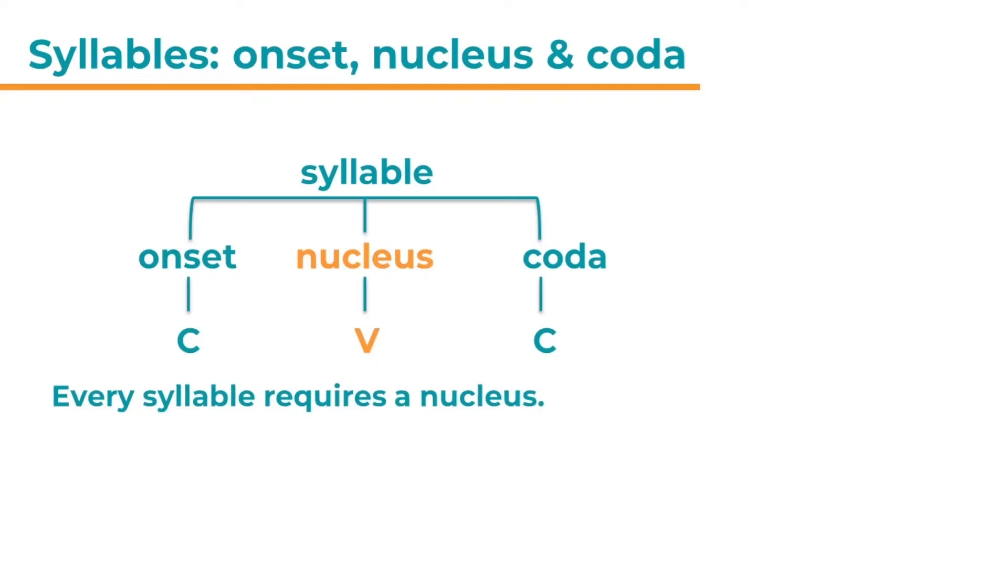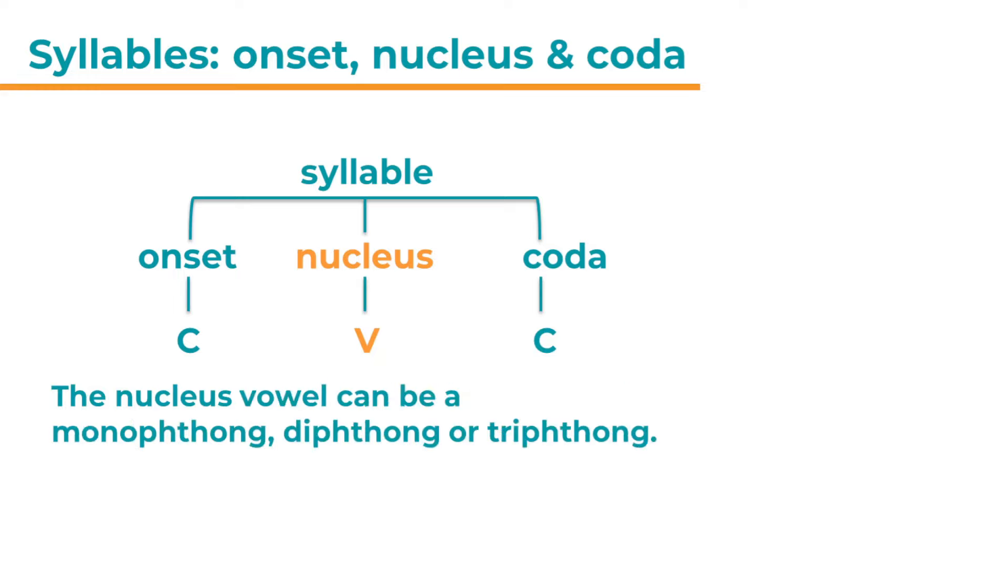Now let's have a look at the nucleus next. Every syllable requires a nucleus. The nucleus consists of only one vowel sound. If there's a second, that's another syllable. So this vowel sound in the nucleus can be a monophthong, a single vowel sound, a diphthong, a double vowel sound, or even a triphthong. And if you don't know what these are, have a look at my other videos where I explain them separately.